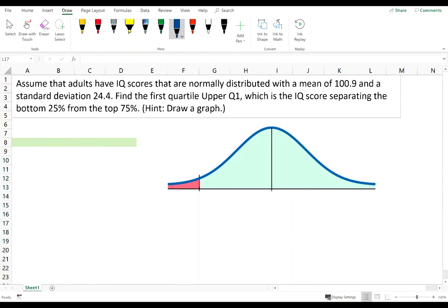Assume that adults have IQ scores that are normally distributed with a mean of 100.9 and a standard deviation of 24.4. Find the first quartile, which is the IQ score separating the bottom 25% from the top 75%.